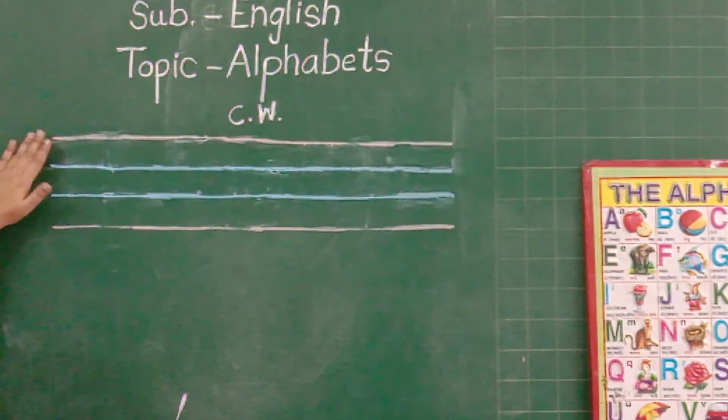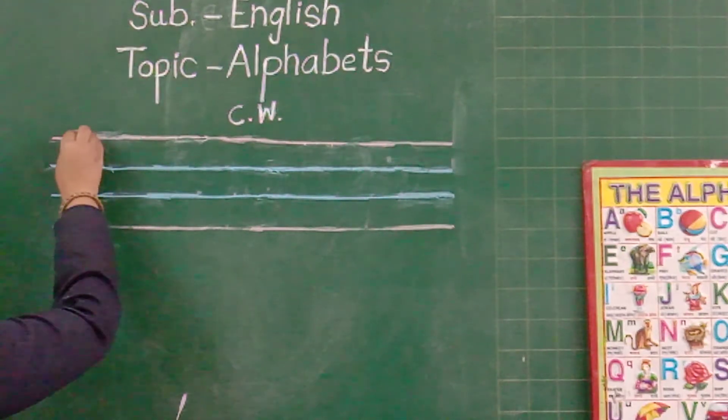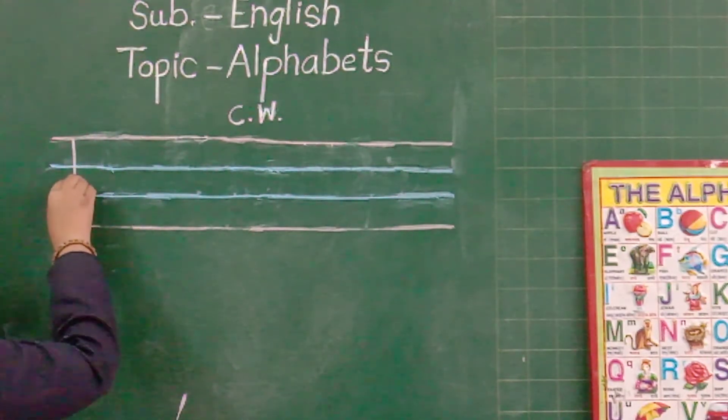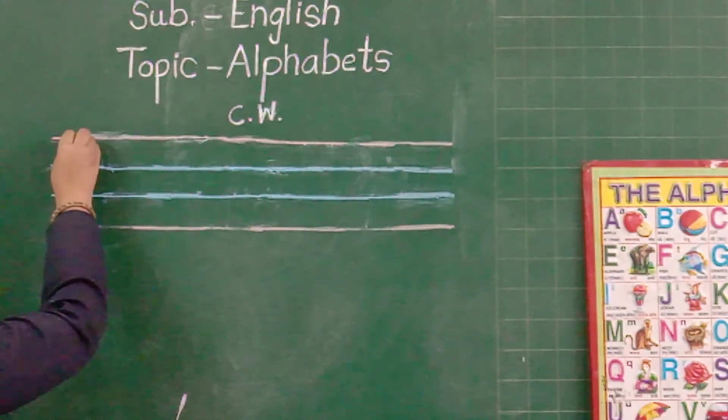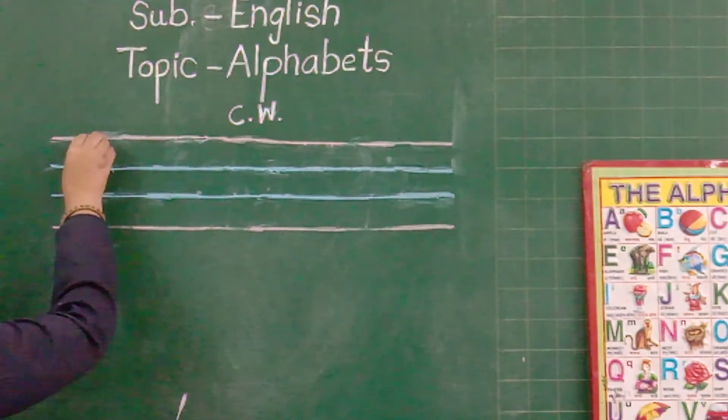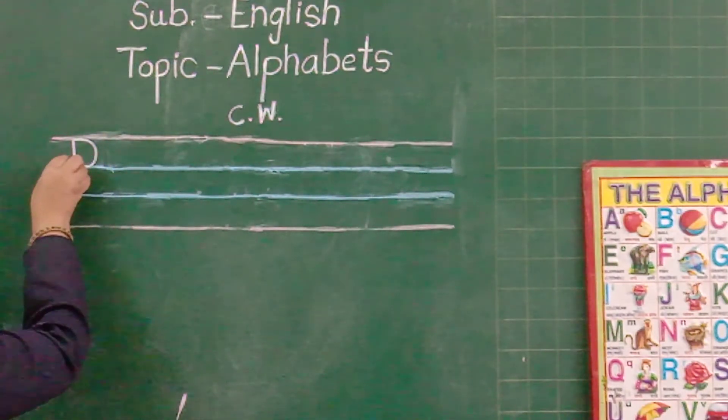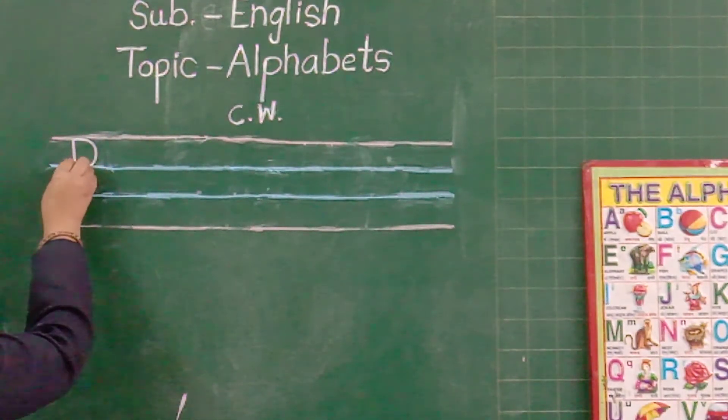We have to start from red line. First, start from red line. Standing line, red to blue. And from red line to first blue line, curl. This is capital P.